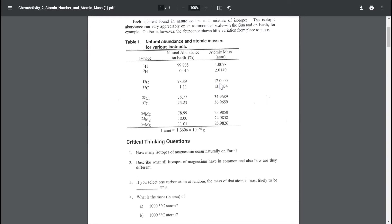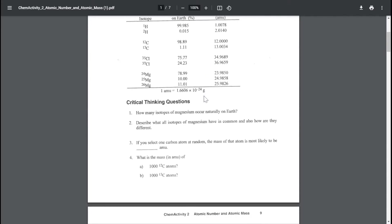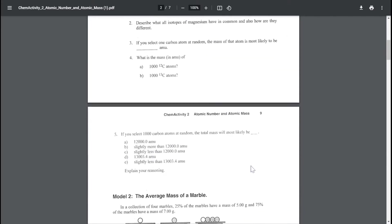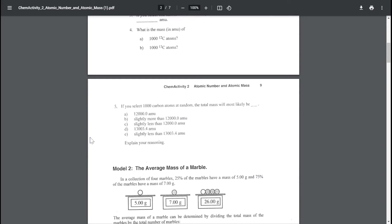So I know the number is going to be very close to 12, probably a little bit above because 1% is heavier. Of the answers you've been given, I would go with slightly more than 12,000 AMU.